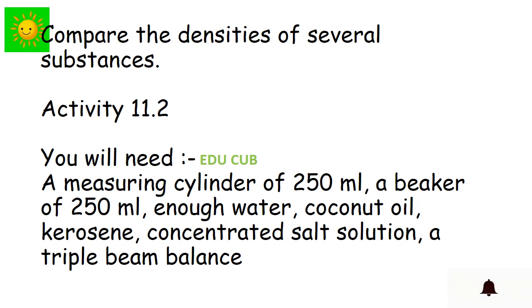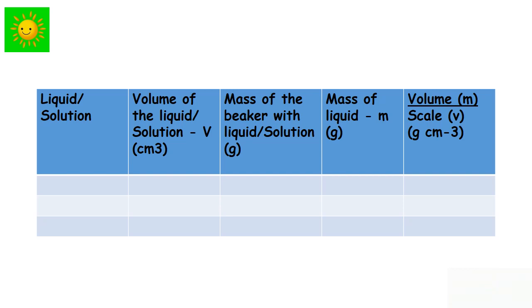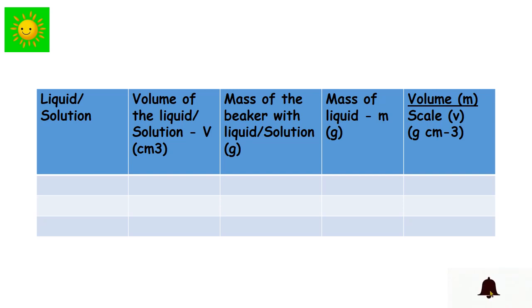Let's compare the densities of several liquids. You need a 250 milliliter measuring cylinder, a 250 milliliter beaker, enough water, coconut oil, kerosene, concentrated salt solution, and a triple beam balance. Clean and dry the beaker and measure its mass using the triple beam balance. Measure 250 milliliter of water, put it into the beaker, and measure the mass of the beaker with the water. Then remove the water and measure 250 milliliter of concentrated salt solution and put it into the beaker to measure its mass.